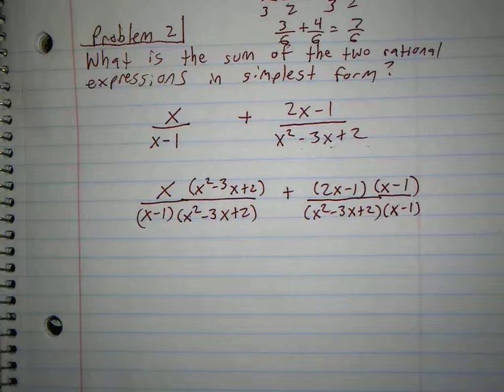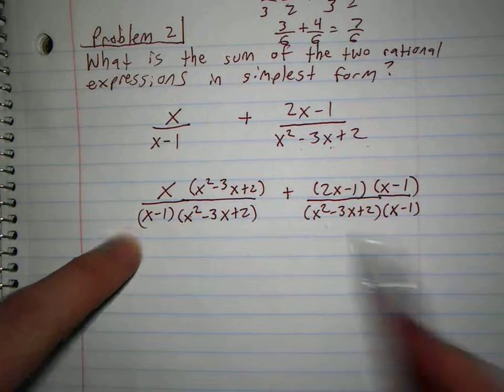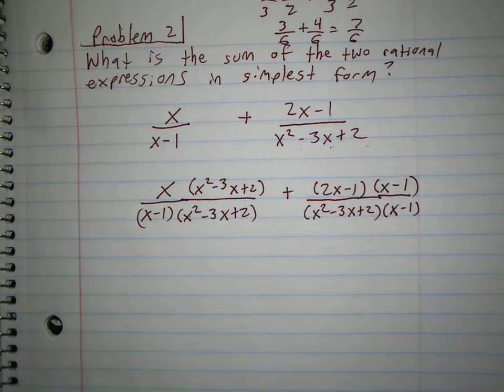How about the x minus 1 up here? Because I can't just put it down here without putting it up there. That would be changing the problem. And just like this x squared minus 3x plus 2, I can't put it down here without putting it up there. So are they the same now? I mean it's a different order but it's the same, right?